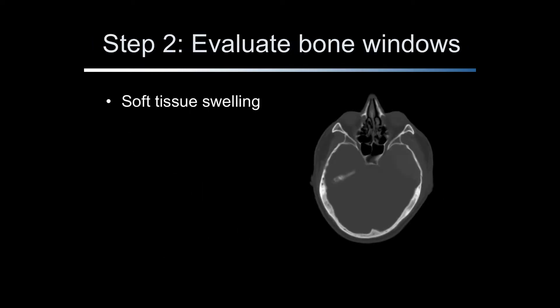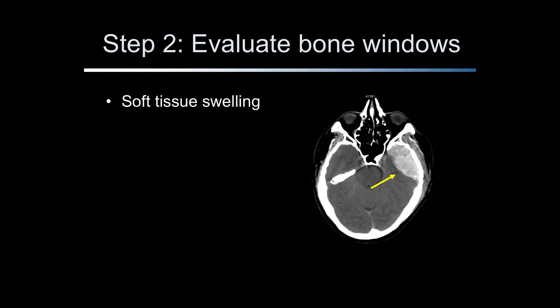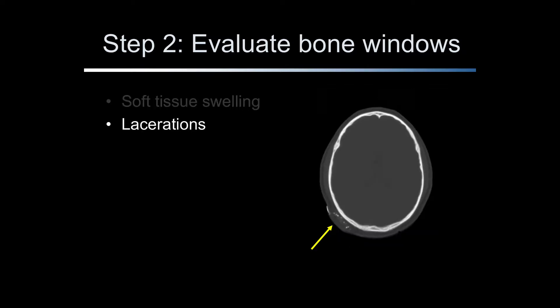Step 2 is to evaluate the bone windows. This is especially important for trauma patients. First, look for soft tissue swelling. Soft tissue swelling seen on bone windows should prompt the reader to look for underlying skull fracture or parenchyma injury such as cerebral contusion, subdural, or epidural blood on corresponding cuts of the parenchyma windows. The reader should also look at the contra-coup parenchyma for contusion. Lacerations, like soft tissue swelling, should prompt the reader to look for bone injury and brain injury in corresponding slices on the parenchyma windows.